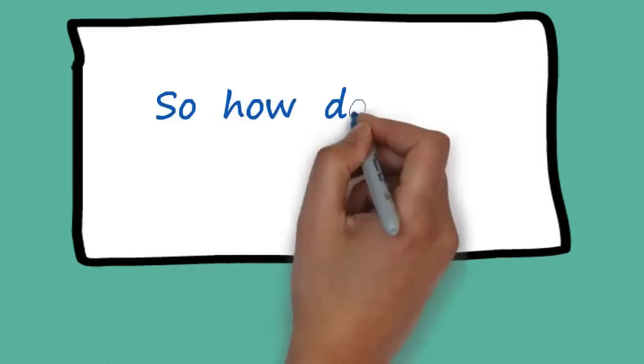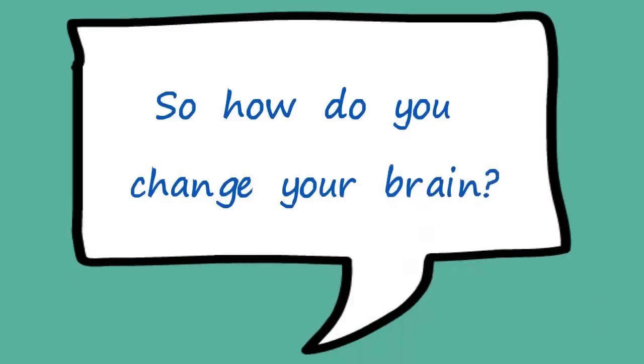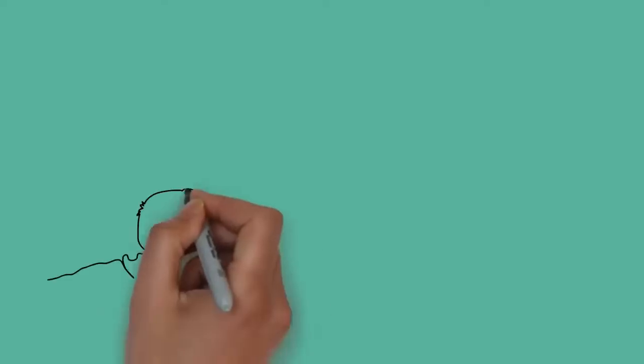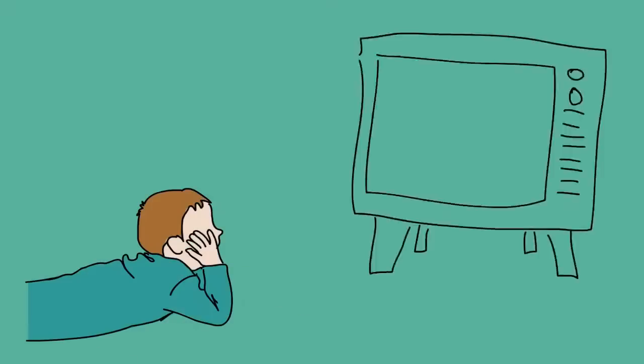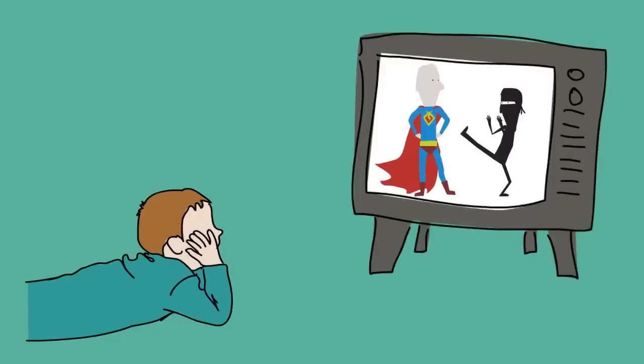So how do you change your brain? It's just learning. Children learn to play a video game and they never read a manual. Their brain figures it out.